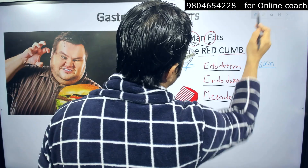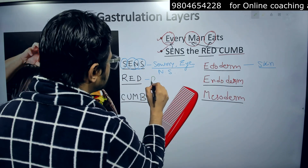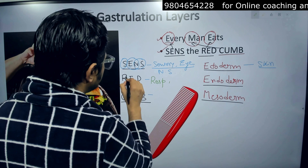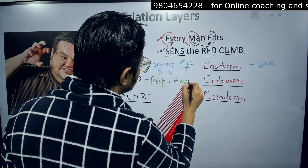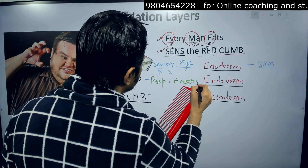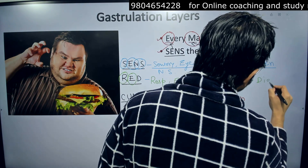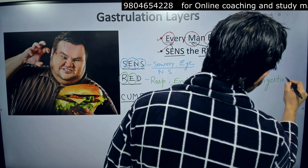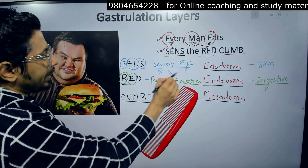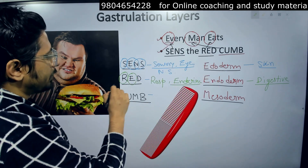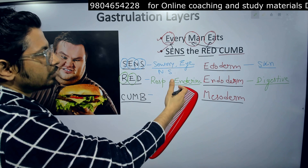Moving to the next one: RED for endoderm. R is for the respiratory system, E is for the endocrine system, and D is for the digestive system. So endoderm generates the respiratory system, endocrine system, and digestive system. RED stands for respiratory, endocrine, and digestive.